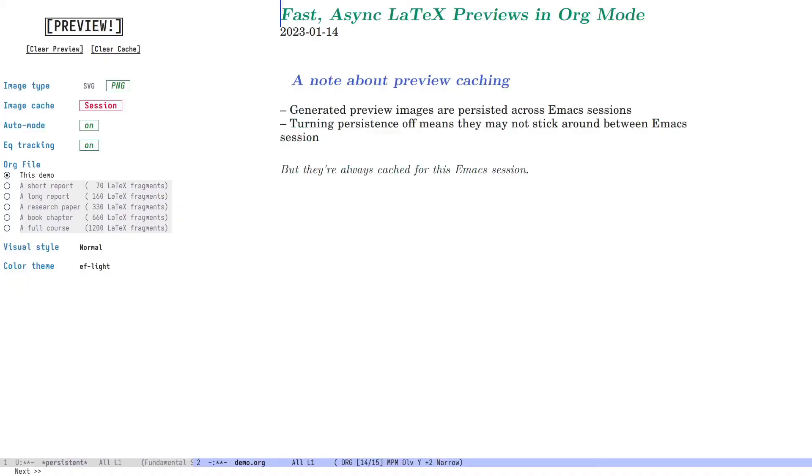A quick note about image caching. By default generated preview images are persisted across Emacs sessions, making previews instant in the future, provided the contents of your files haven't changed. Of course, this isn't as important as before, considering how fast preview generation is now. Turning off persistence makes the generated previews potentially unavailable for reuse in future Emacs sessions, but they continue to be available in this one. You don't have to keep regenerating previews the way I have by explicitly clearing the cache for the purposes of this demo.